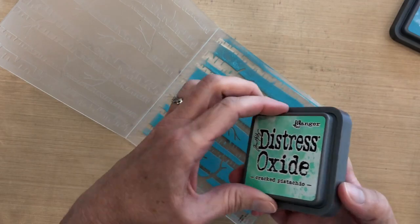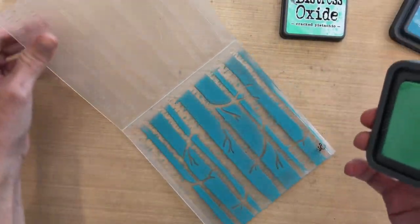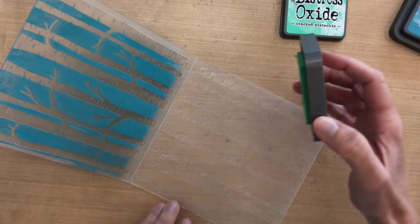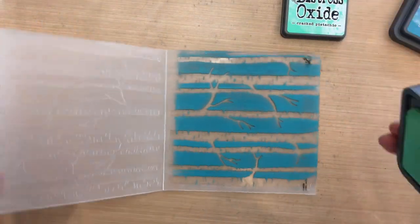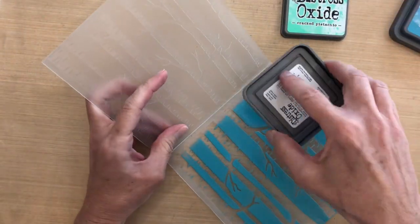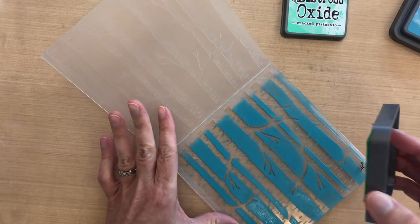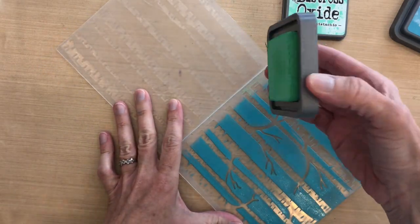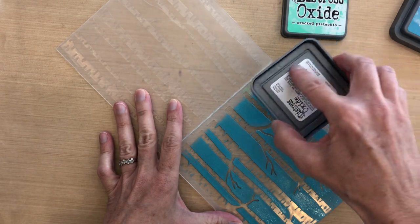Toward the crease of this embossing folder, the trees end, so it's almost like they're ending into some ground area. I'm going to try to make that look like grass. I don't want to get my Cracked Pistachio in my Broken China ink.